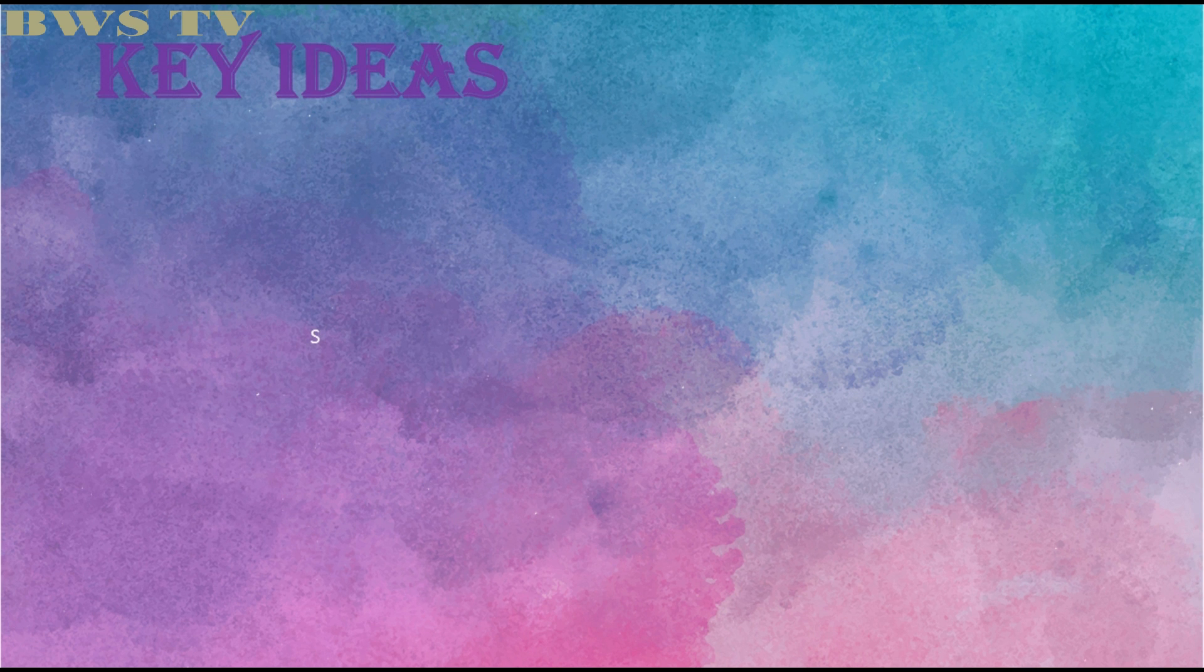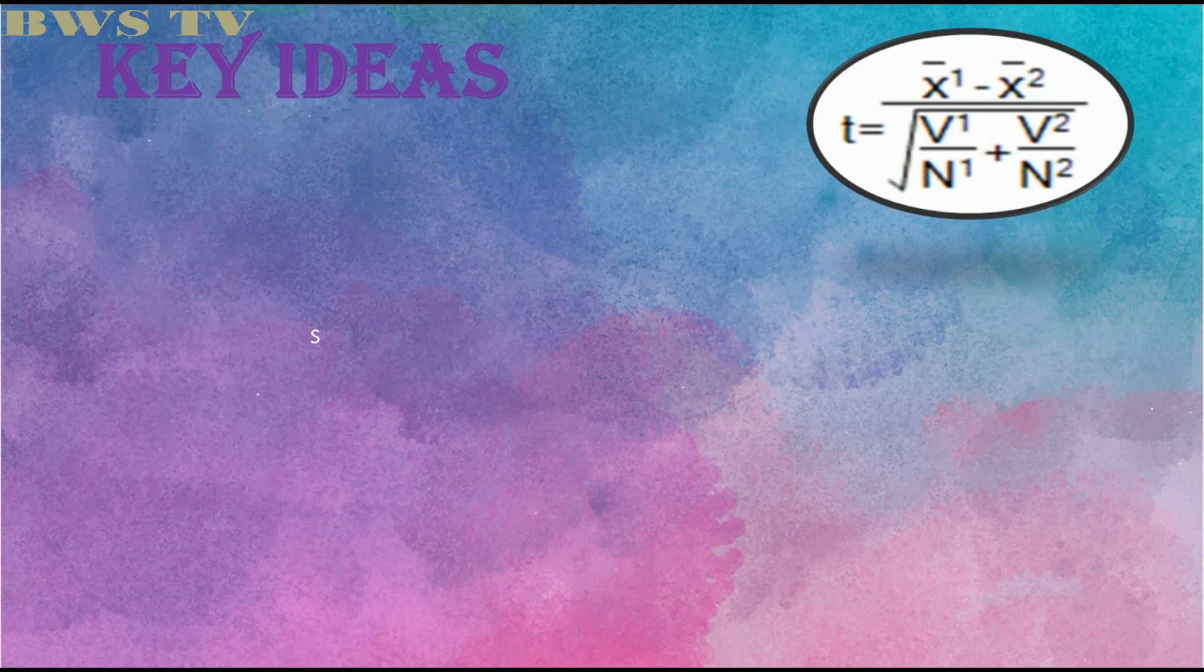Firstly, I'll introduce to you the key ideas which will be needed later on. So we have here t is equal to x1 minus x̄1 divided by the square root of v1 divided by n1 plus v2 divided by n2.